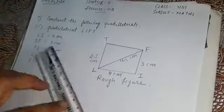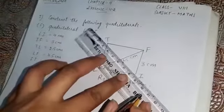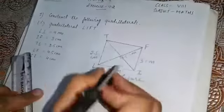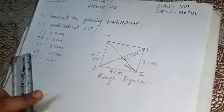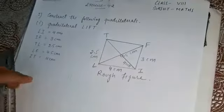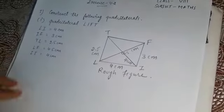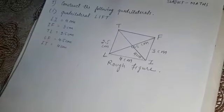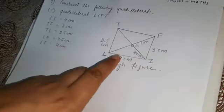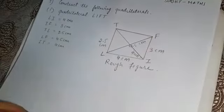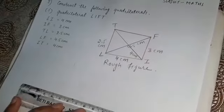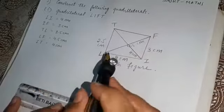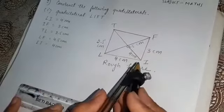IT is 4 centimeters — it is also a diagonal. Join this; IT is 4 centimeters. Now let's start the actual figure. It would be better if you start with a diagonal. I am going to take diagonal LF first. LF is 4.5 centimeters — you can start drawing with LI also, but I am taking the diagonal first.